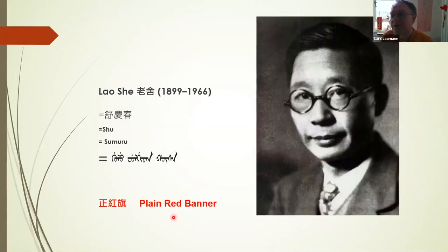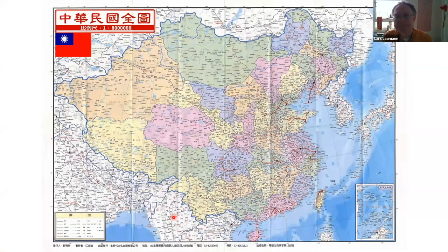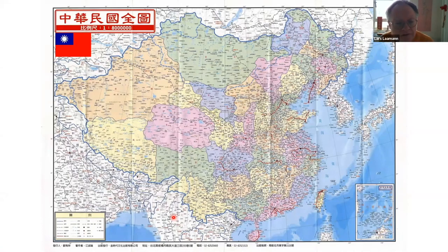How do we know whether somebody belongs to a Manchu family today? Looking at the surname often helps, because there are certain names that are transliterations of Manchu names into Chinese. Lao She is of course a famous writer of the Republican era, the May Fourth era. Here you have a map of the Republic, published in Taiwan not so long ago, and you can see that this also includes Outer Mongolia, because for the Republic of China, Outer Mongolia is still part of it.